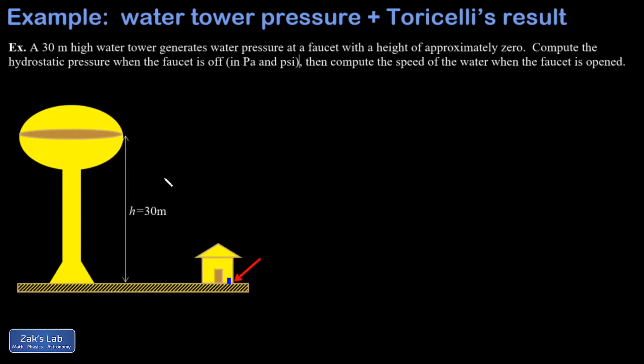In this problem, we're looking at the hydrostatic pressure generated by a water tower that's 30 meters high. So I have a little blue faucet down here to measure the pressure at. And then we're going to open the faucet and ask what's the speed of the water that's flowing out. So we have a hydrostatics problem first and then a hydrodynamics problem to follow it up.